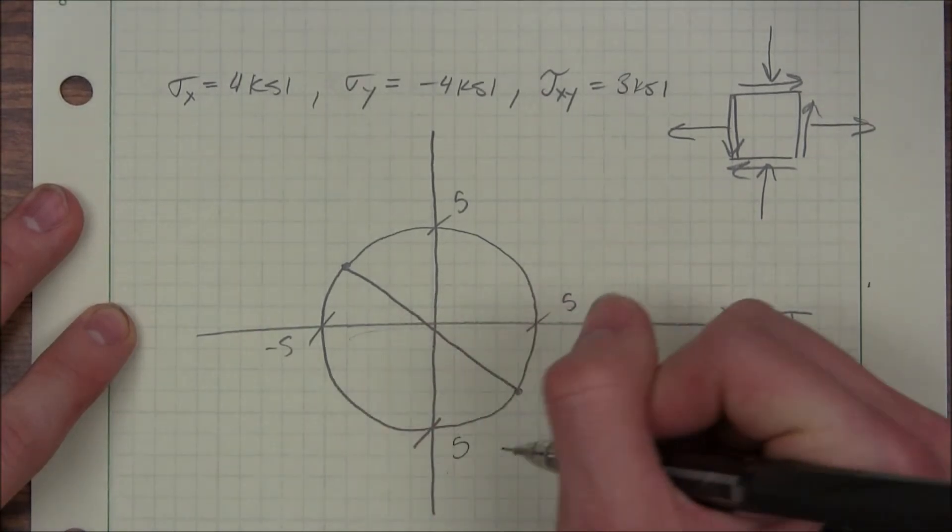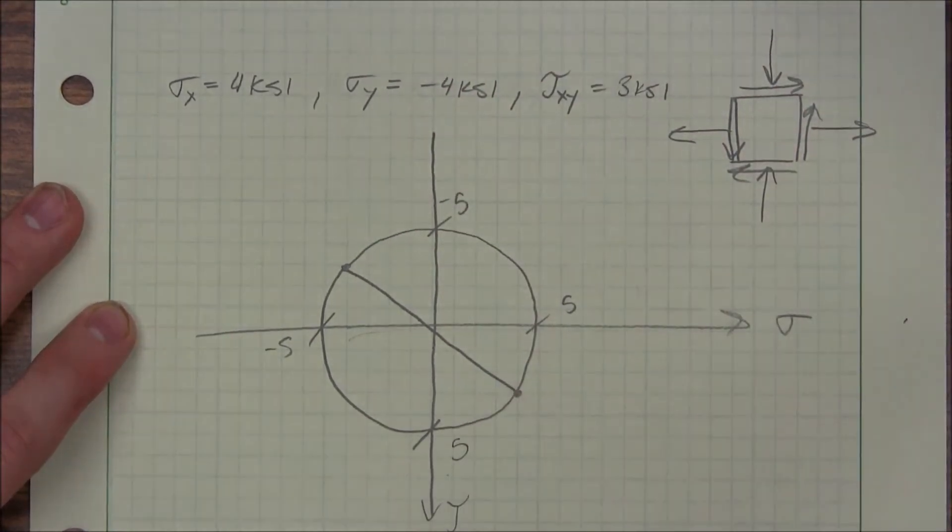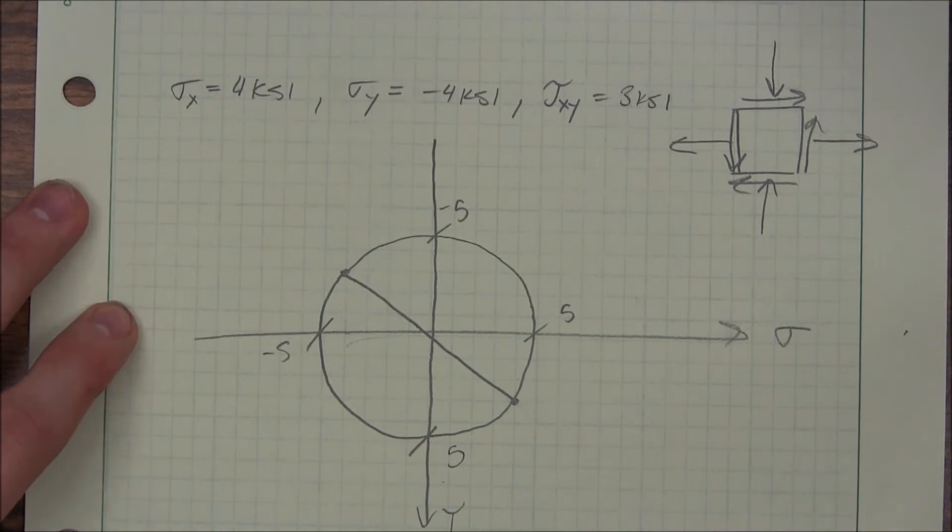And technically, this is positive tau and this is negative tau. So I guess this would be the minimum, this would be the positive. But I can tell you that right off the bat.